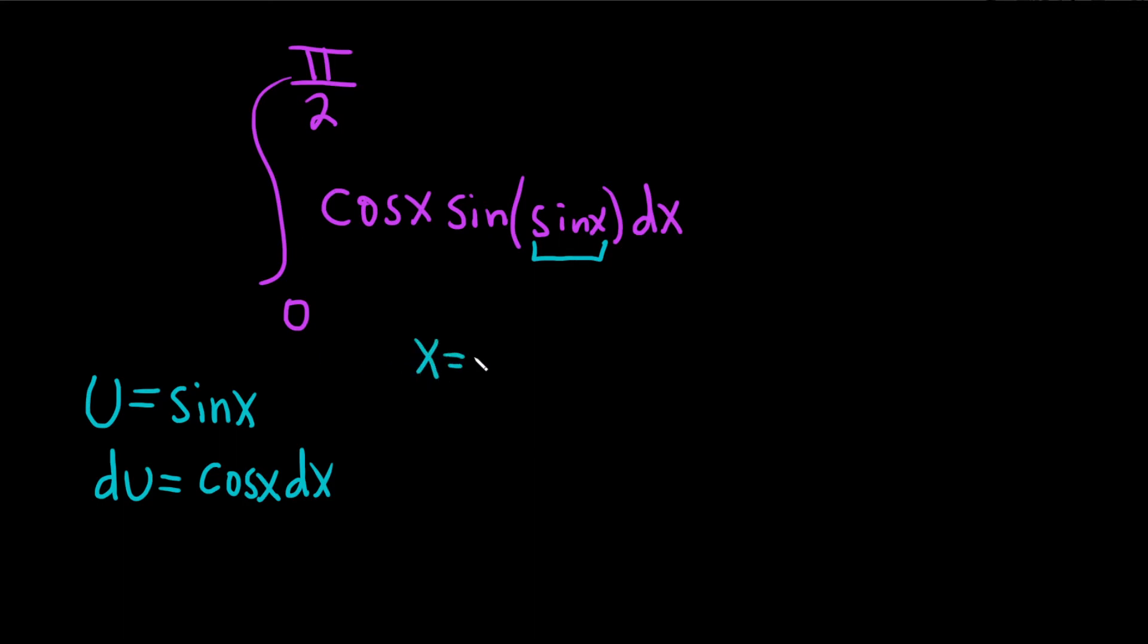So when x is equal to 0, you just take your 0 and you plug it in here for your u. So u is equal to the sine of 0 which is 0, so u is equal to 0. And then when x is equal to pi over 2, same thing, you take your pi over 2 and you plug it in here to your u.